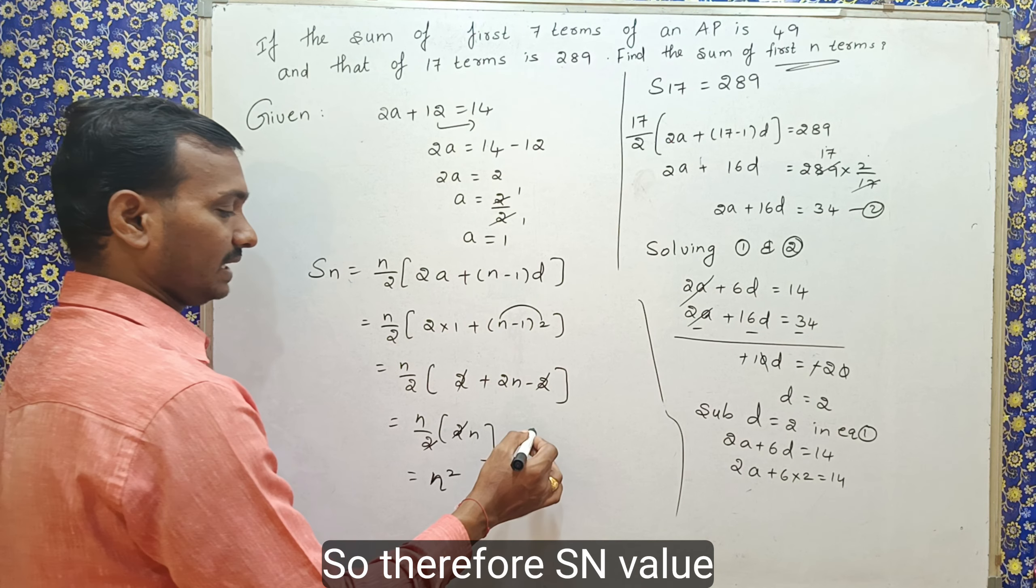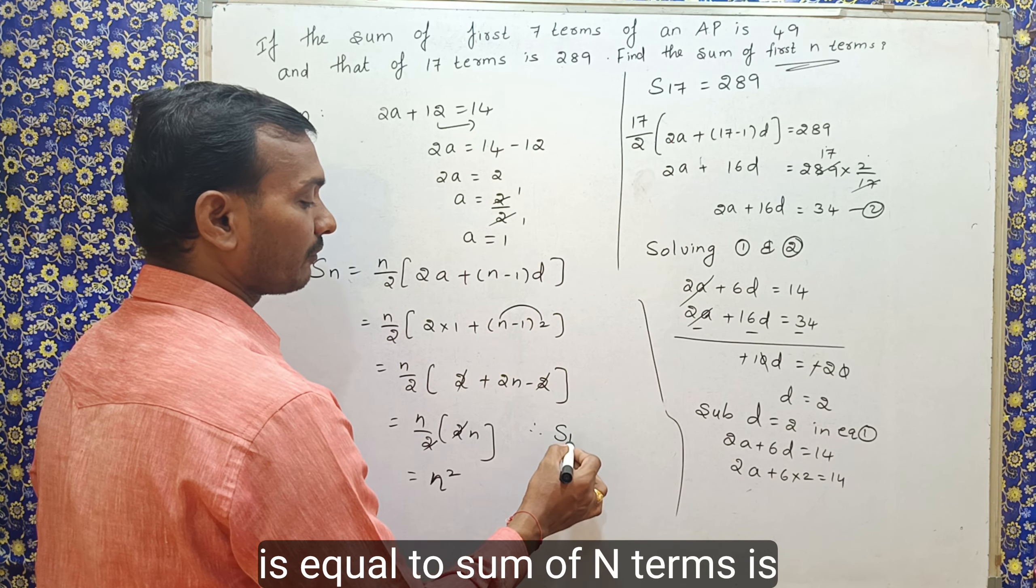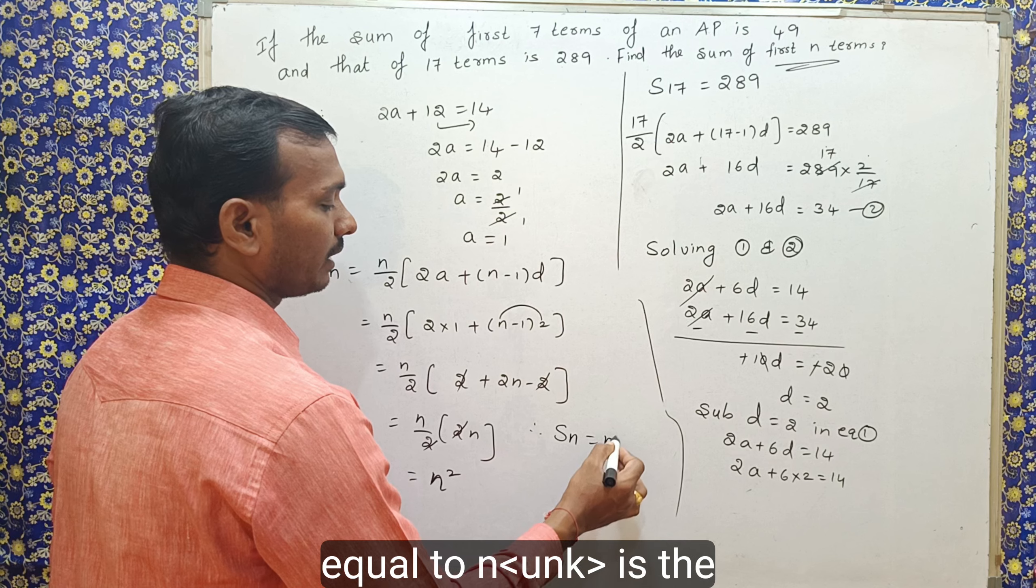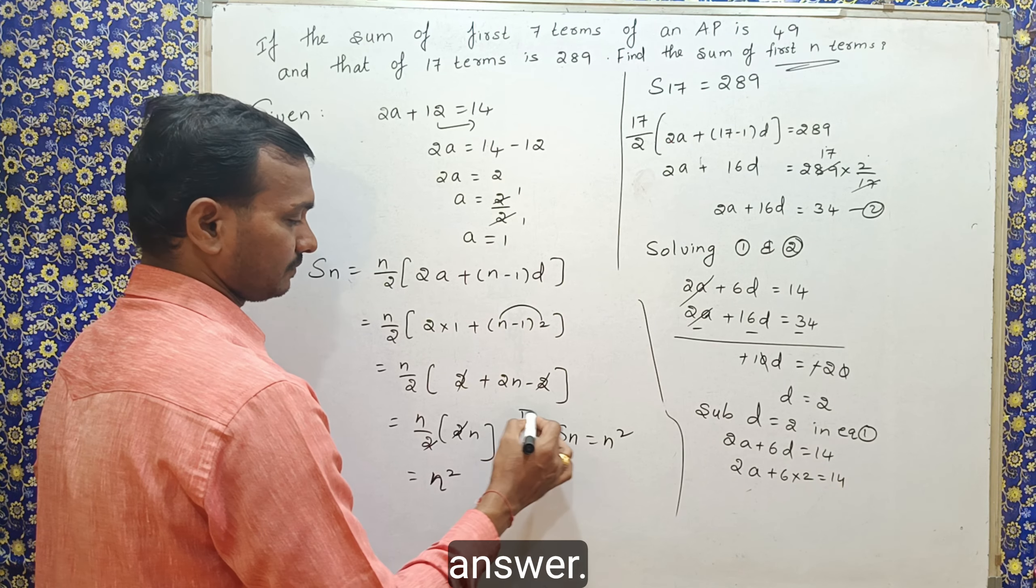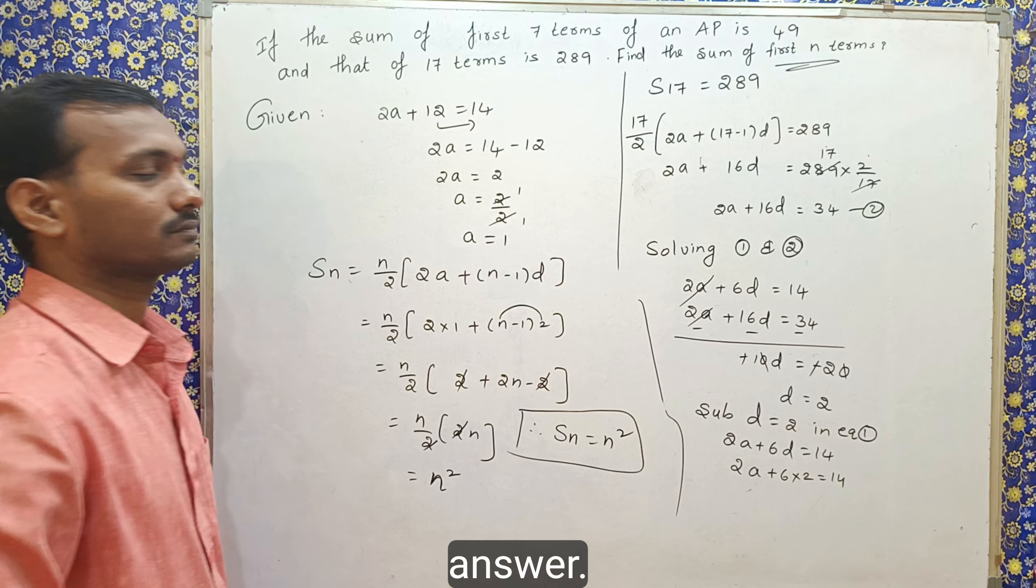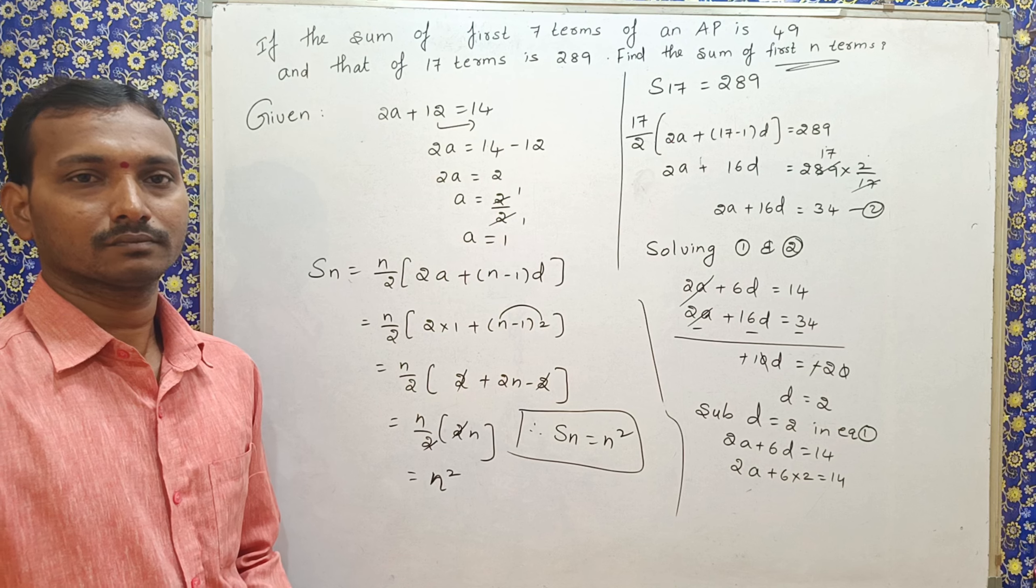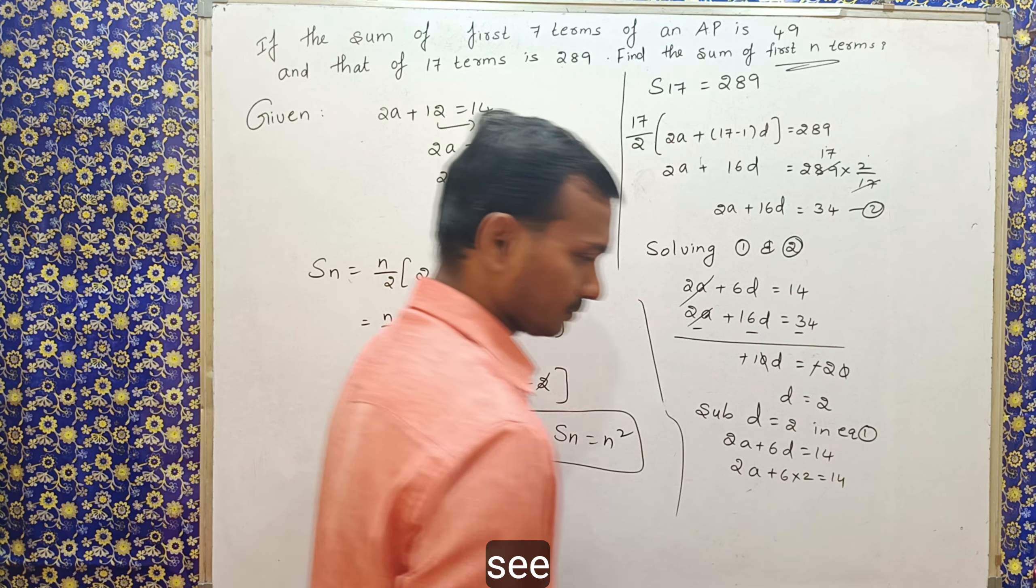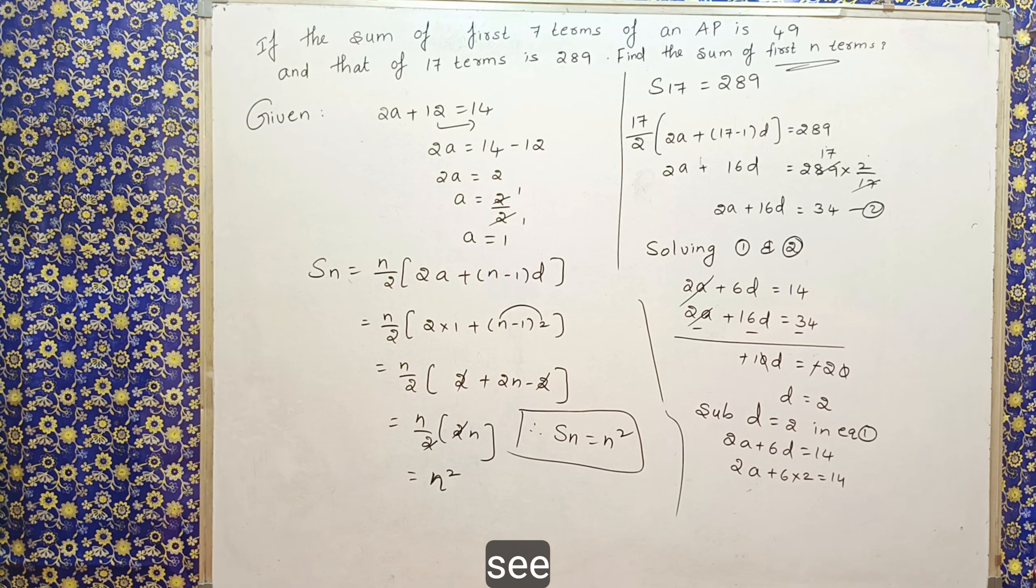So, therefore, Sn value is equal to sum of n terms is equal to n square is the answer. Thank you.